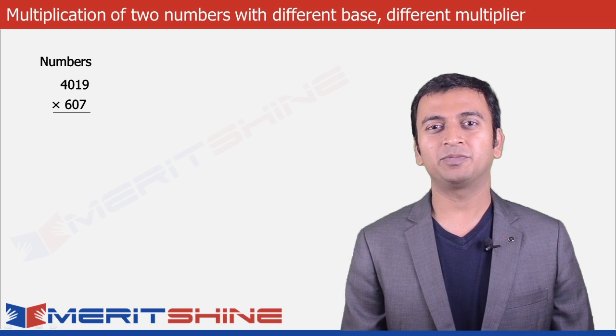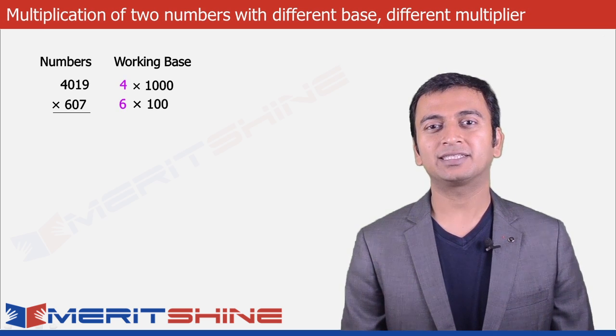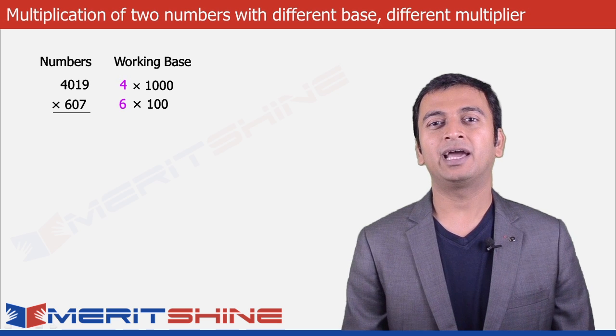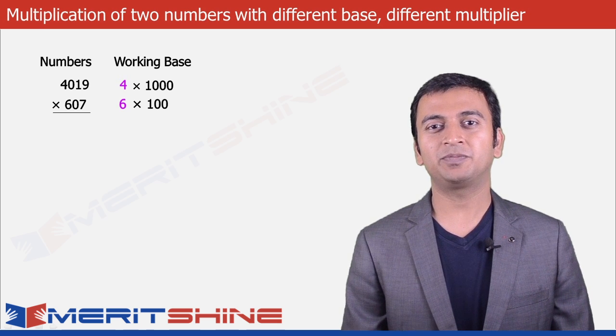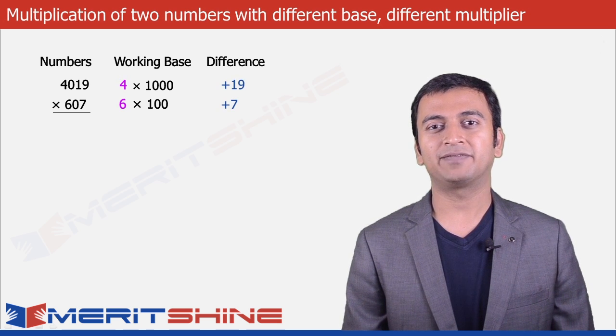Here our working base would be 4 into 1000 and 6 into 100 respectively. And our differences would be plus 19 and plus 7.